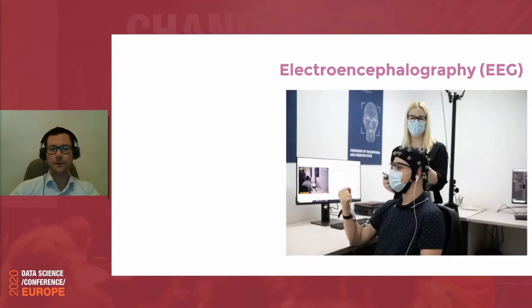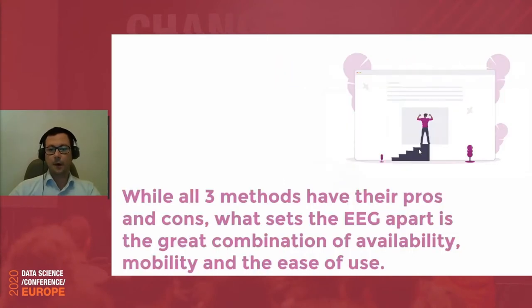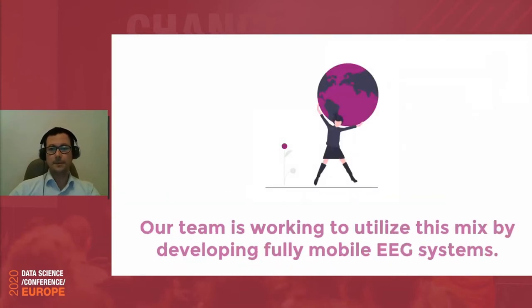Finally, there is electroencephalography, or EEG. This is what we do and what we find most interesting. Very similarly to MEG, the electrodes you see on this person's head measure the potentials coming from underlying neural activity — basically measuring electric fields that change due to the changes of underlying neurons. All three methods have their pros and cons. What sets apart EEG is a great combination of availability, mobility, and ease of use, making it very attractive.